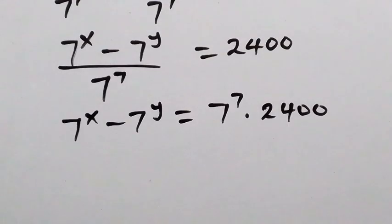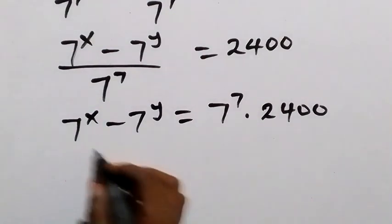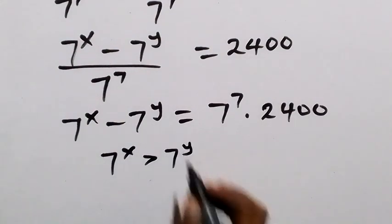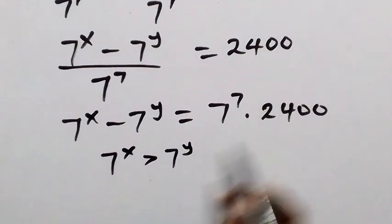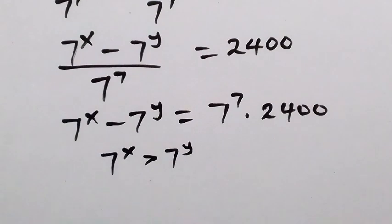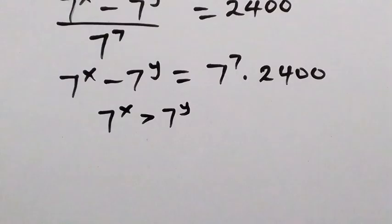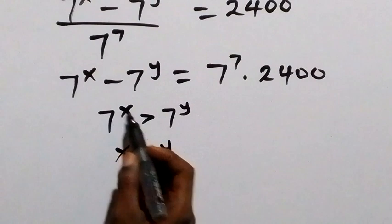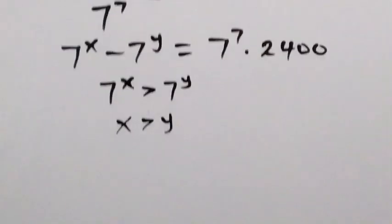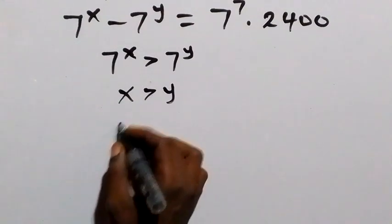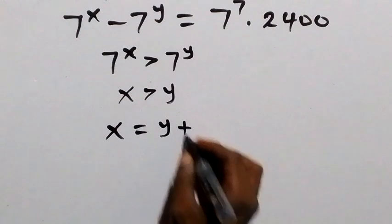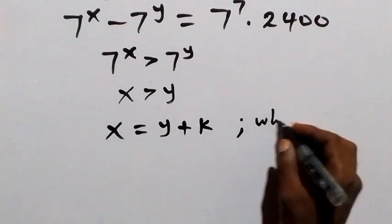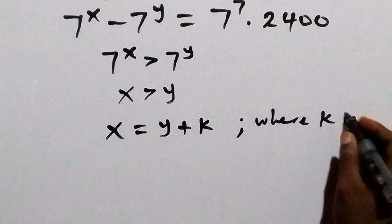From here, we understand that 7 raised to power x is greater than 7 raised to power y, because for us to have a positive number here, 7 raised to power x must be greater than 7 raised to power y. So x is greater than y. We can therefore write x as y plus a constant k, where k is any positive integer.